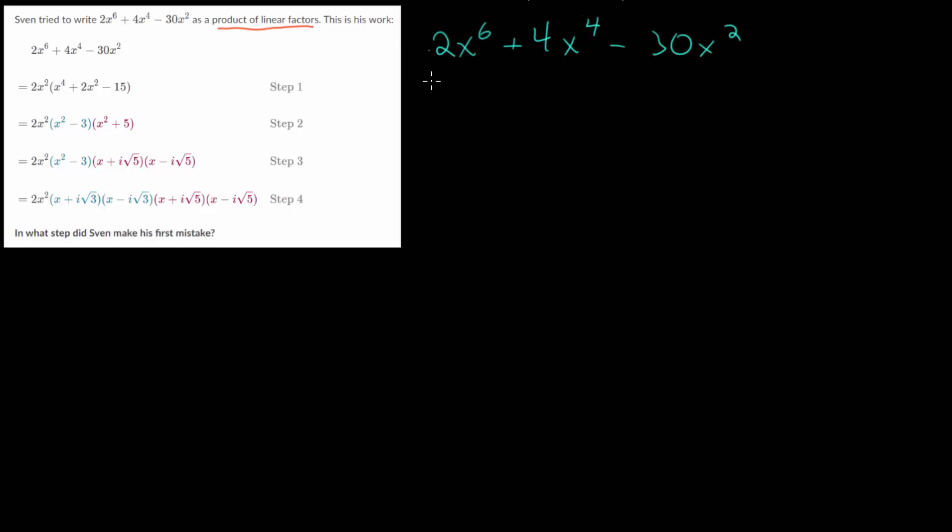Remember when factoring that you should start by looking for a greatest common factor between each of the terms. We can notice that each term is divisible by 2, and each term has at least x squared. So let's factor out 2x squared from each of the terms. Essentially, we're just dividing each of these terms by 2x squared. This one would just be x to the 4th. This one would have a coefficient of 2. And this one, we're dividing minus 30 by 2, so now it's minus 15.